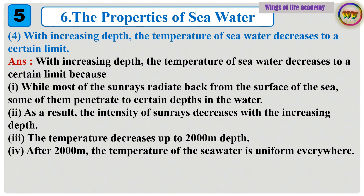Question 4: With increasing depth, the temperature of seawater decreases to a certain limit. Answer: While most of the sunrays radiate back from the surface of the sea, some of them penetrate to certain depths in the water. As a result, the intensity of sunrays decreases with the increasing depth. The temperature decreases up to 2,000 meters depth. After 2,000 meters, the temperature of the seawater is uniform everywhere.